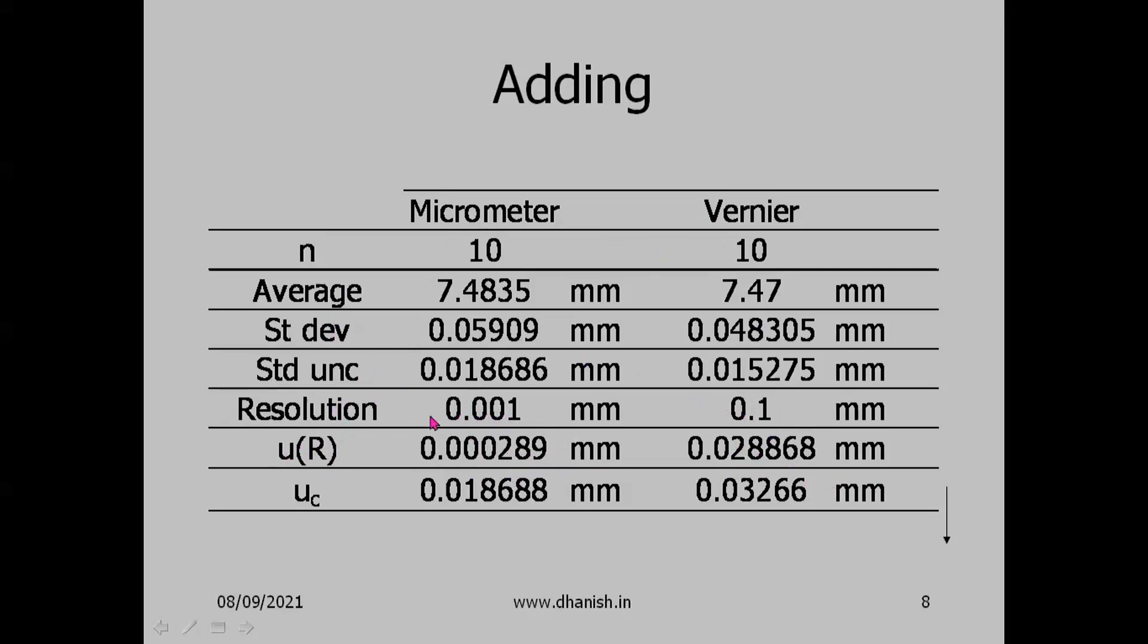Now we have two sources of uncertainty: standard uncertainty due to repeated readings and standard uncertainty due to resolution. Take root sum of squares of these two quantities. For micrometer we get 0.018688mm - since the uncertainty due to resolution is very small, it doesn't make much difference. But in case of vernier, when you add the uncertainty due to resolution (0.0288mm), which is higher than the uncertainty due to repeated readings, the combined standard uncertainty becomes 0.03mm.